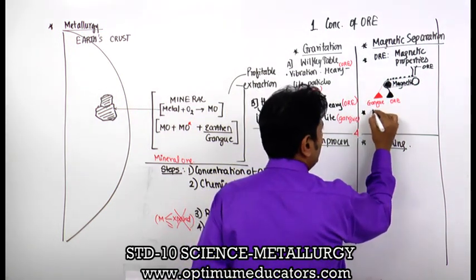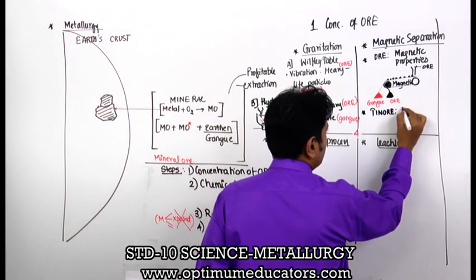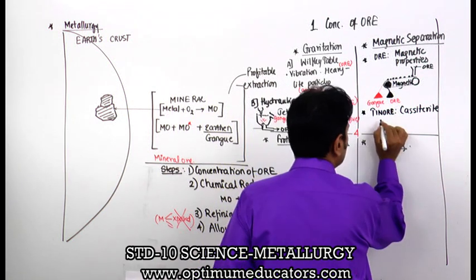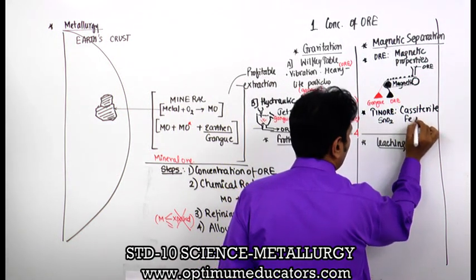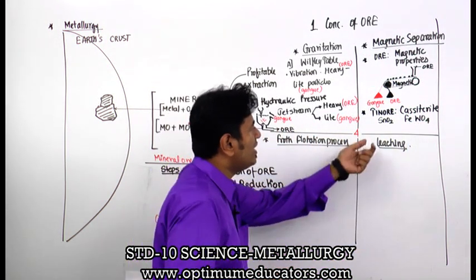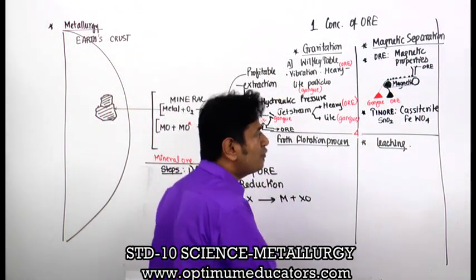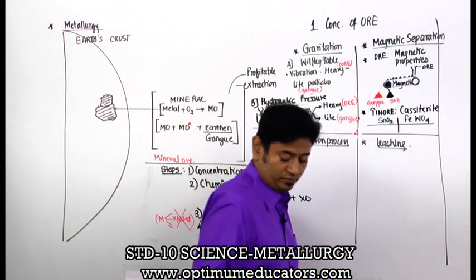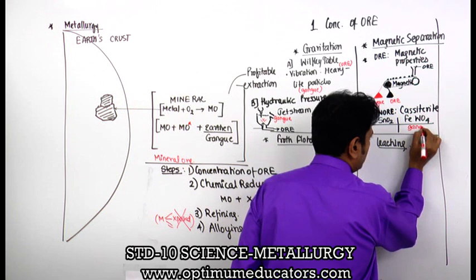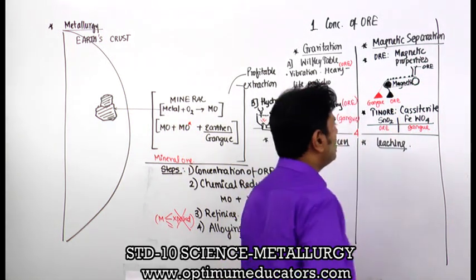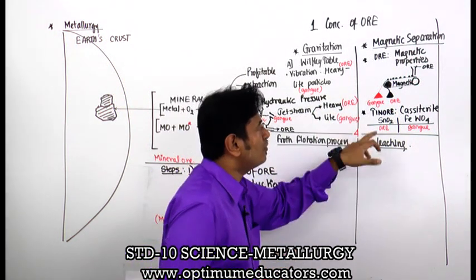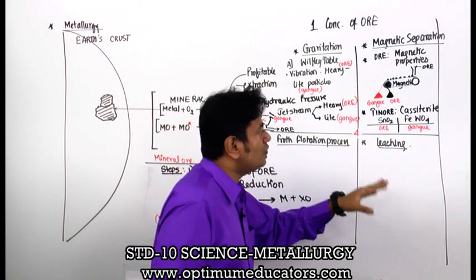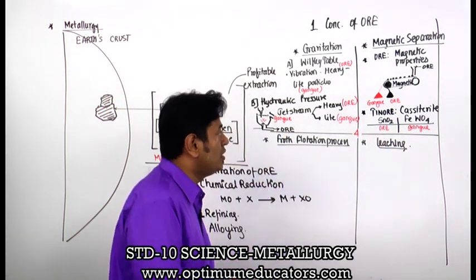An example of magnetic separation is tin ore, known as cassiterite. It contains SnO2 and FeWO4. I want tin (stannum), so I want SnO2. SnO2 is non-magnetic and FeWO4 is magnetic. So FeWO4 is the gang, which is attracted to the magnet and separated, while SnO2 is my ore. That is how we use magnetic separation to separate tin oxide from ferrous tungstate (FeWO4).